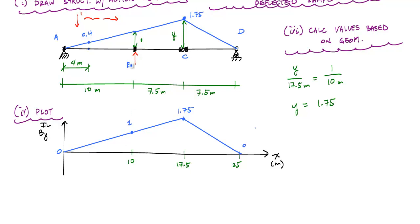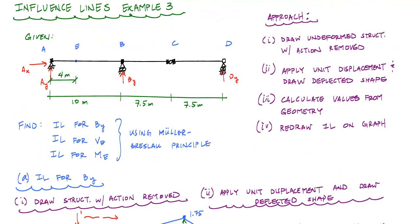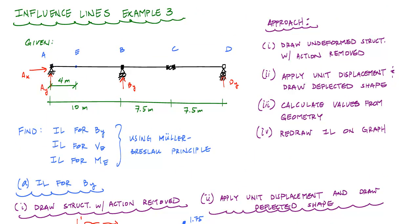So let's go ahead now and do the influence line for the internal shear and then the internal moment at point E.